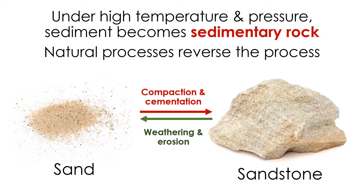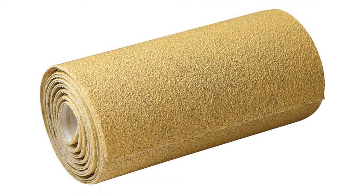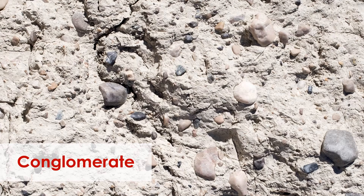Interestingly, the opposite is also true — there are a variety of natural processes that break sedimentary rocks down into sediment. Sandstone is an example of a sedimentary rock; it forms from sand grains. You can feel these grains on the surface of sandstone, which has a rough, coarse texture like sandpaper. This tells us that we can recognize sedimentary rocks by both feel and appearance — if you touch a sedimentary rock, you will usually feel grains, and if you look closely, you will usually see them.